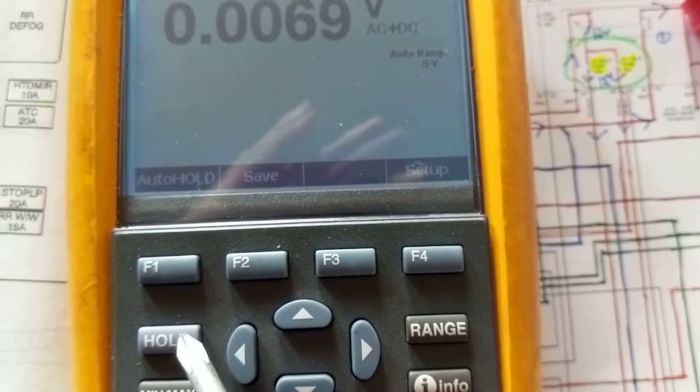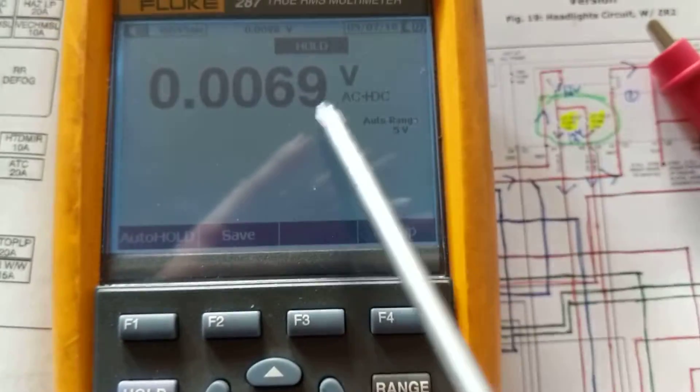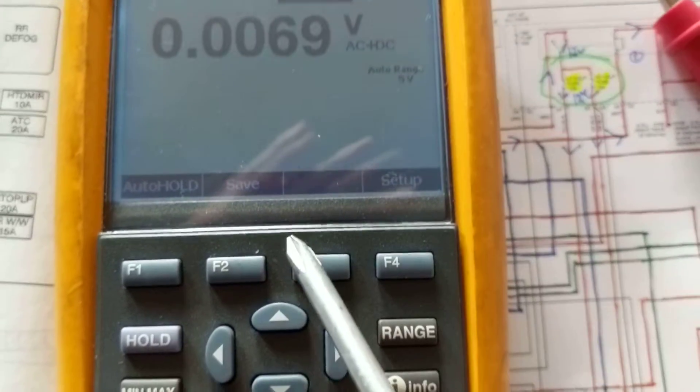Hold is a nice thing. Let's say when you measure something and you really can't hold the probes there that long. So when you put hold, it'll hold that value. As you see, 0.069 is a value that it's holding, like in memory.